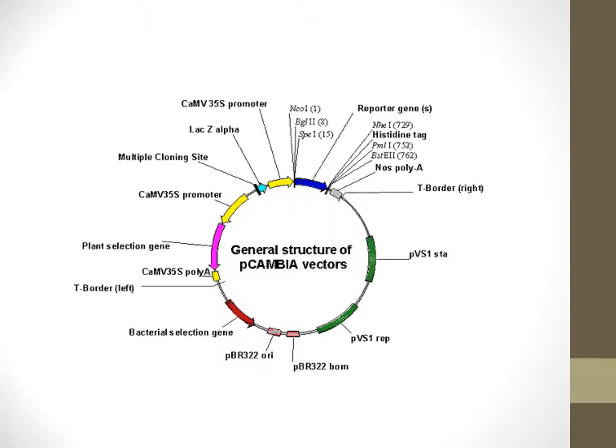This is the general structure of the pCAMBIA vector, which is a shuttle vector that can replicate both in Agrobacterium tumefaciens as well as in Escherichia coli.